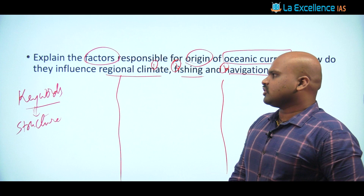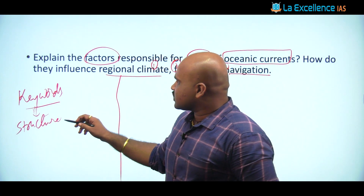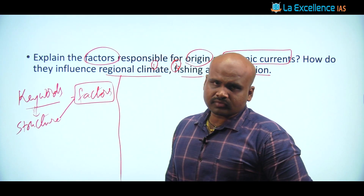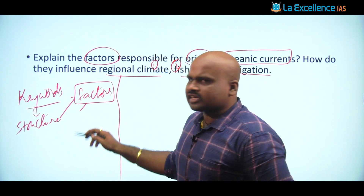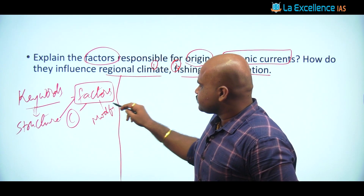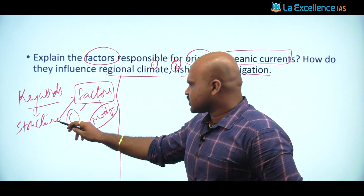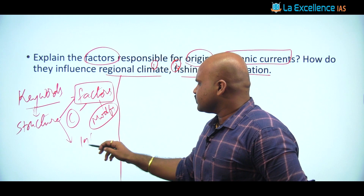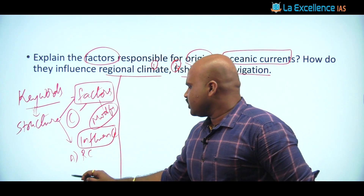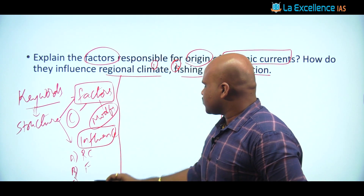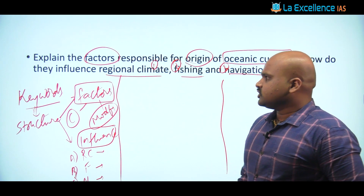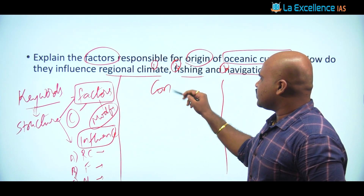The immediate part we do is structure this question based on the keywords. In the initial part we talk about the factors for its origin — a simple classification is causative factors and modifying factors. Then once we discuss the factors, we talk about the influence: A) on regional climate, B) on fishing, and C) on navigation — on each of these aspects we state what is going to be the impact with respect to oceanic currents.